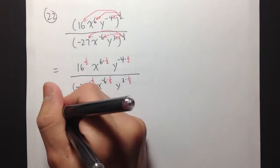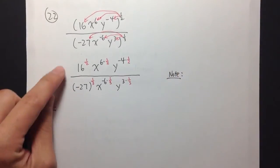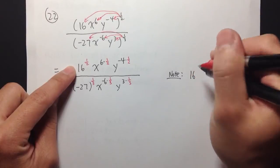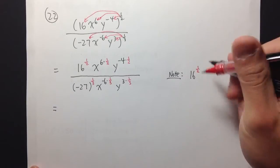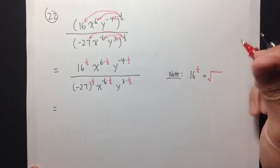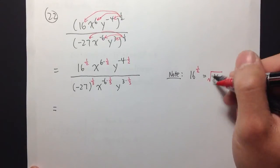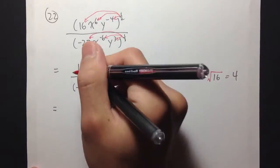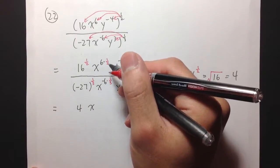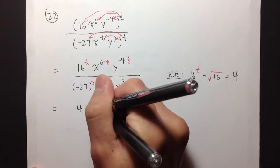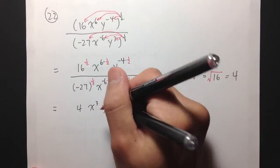Then let's see what we have. Let me make a note on the side. So as we can see, we have 16 to the 1 half power. The 1 half power means to take the square root of 16, which equals 4. So we will have 4. Then x: 6 times 1 half is 3, so x to the 3rd power. And then for y: negative 4 times 1 half is negative 2.